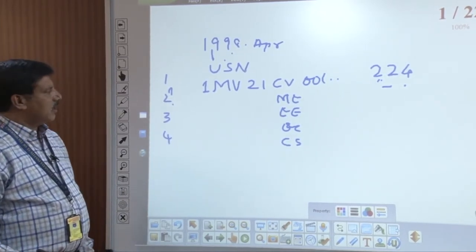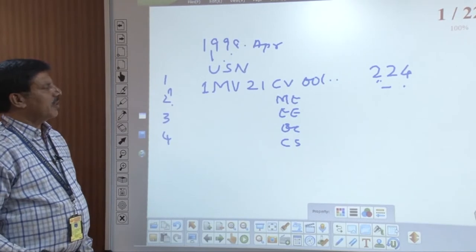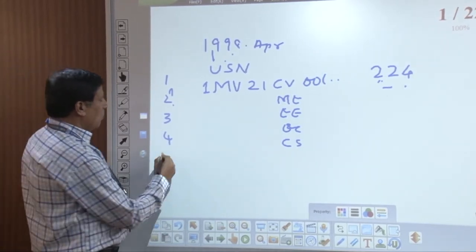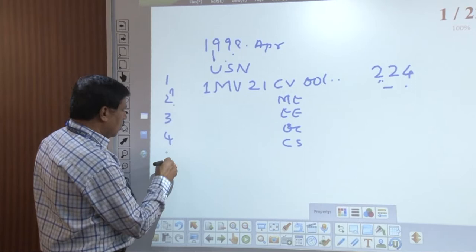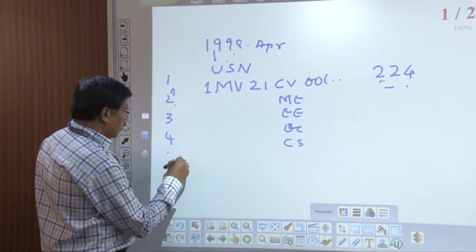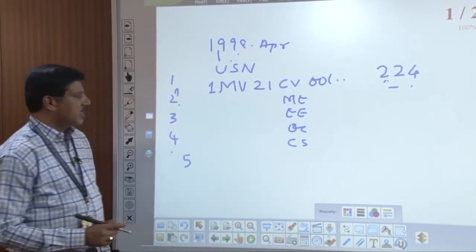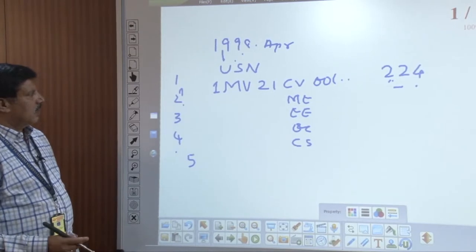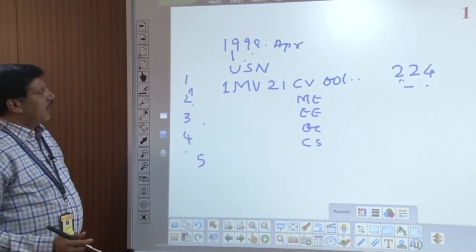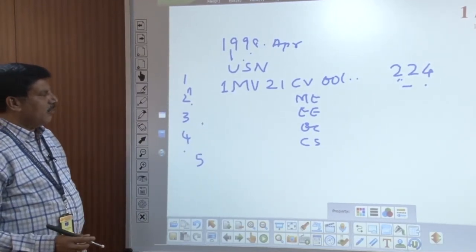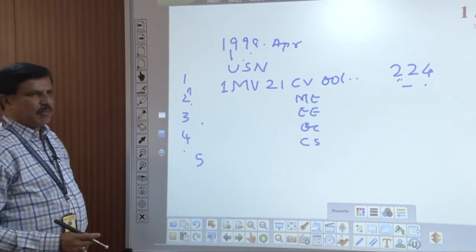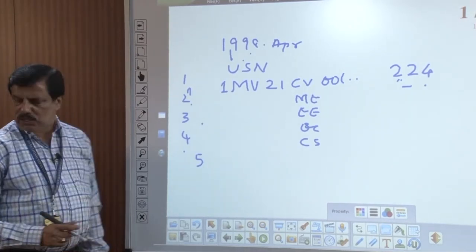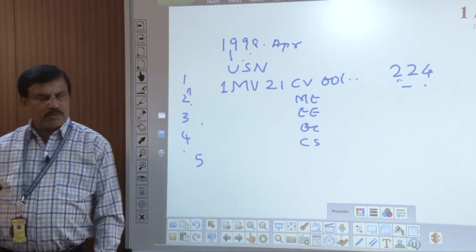This is called the University Seat Number, or USN — a term used nowhere else in this country except under VTU in Karnataka. USN is essentially your registration number used to appear for the main examination. There is now a fifth zone added in Mangaluru, so the zones are Bengaluru, Mysore, Kalaburagi, and Belagavi, plus Mangaluru.